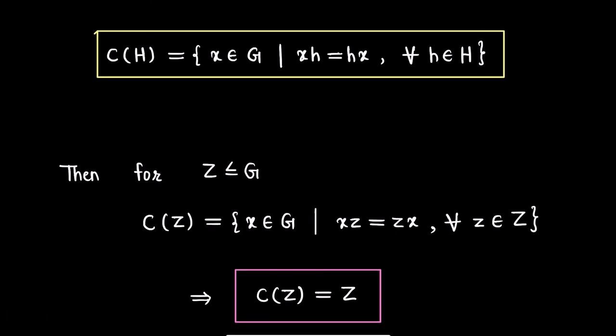We have shown that the center Z is a subgroup of G, and Z is the collection of all elements of G that commute with all other elements of G. If we write the centralizer of Z, comparing the definition of centralizer of a subgroup with the definition of the center, we conclude that the centralizer of the center Z equals the center Z itself. So we can recognize the center as the centralizer of the subgroup Z, and this proves our result.